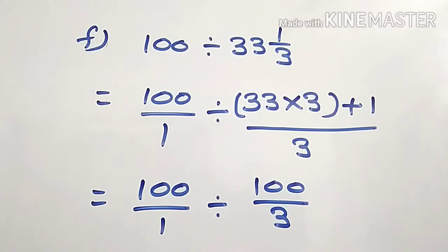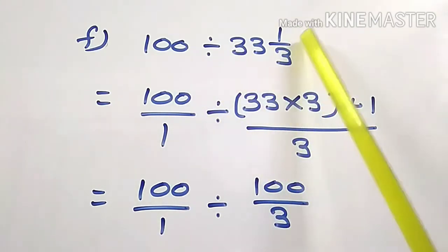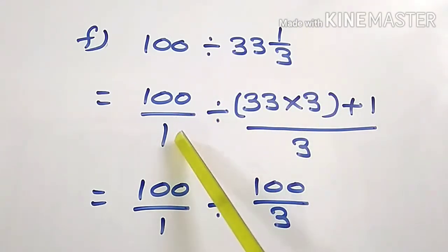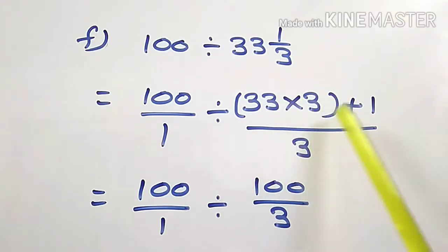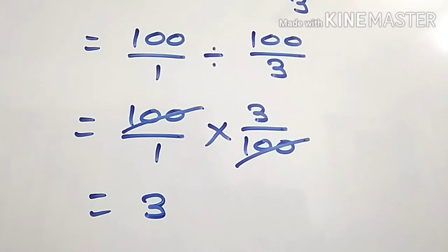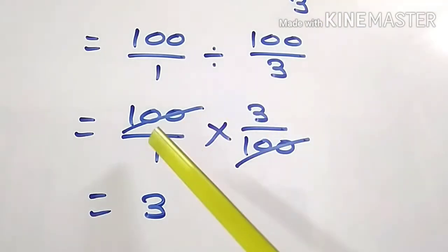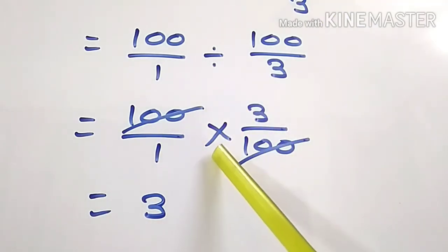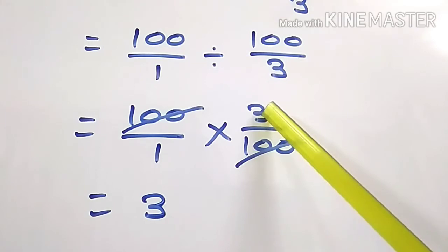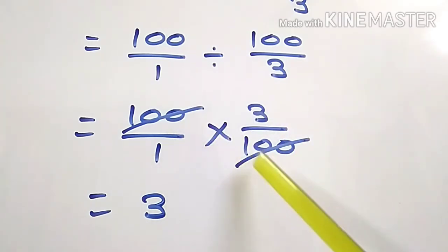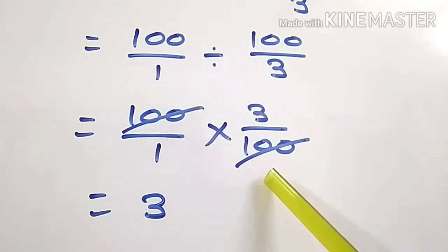Question F: 100 divided by 33 and 1/3. Write it as 100/1, and convert the mixed number into improper fraction: 33 threes are 99, plus 1 is 100/3. So 100/1 divided by 100/3. Change the sign of division into multiplication and take reciprocal of 100/3, which is 3/100. This 100 is common in numerator and denominator, so cancel it out. 3 is the quotient.